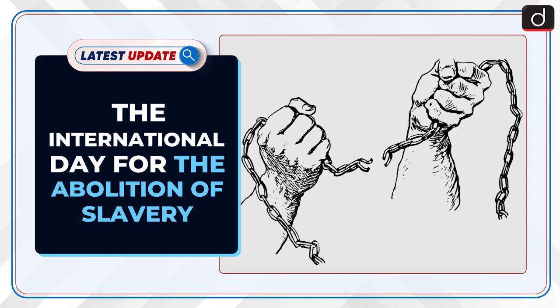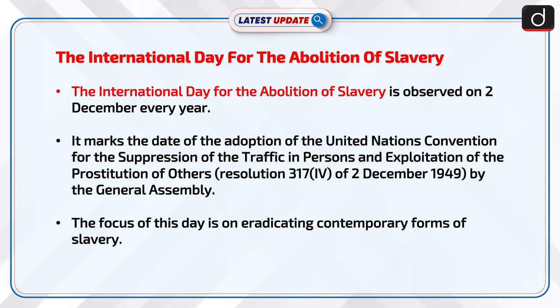Welcome to the latest update program of DISH-TIS. In this series, the topic of discussion is the International Day for the Abolition of Slavery. The International Day for the Abolition of Slavery is observed on 2 December every year.